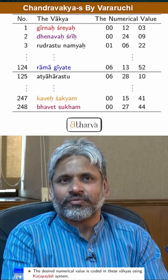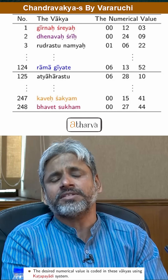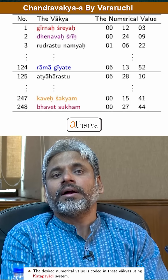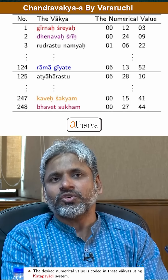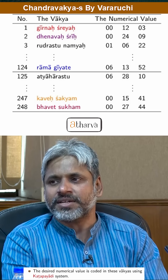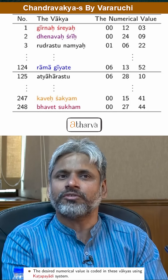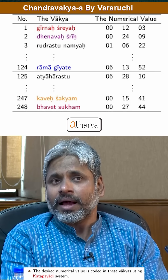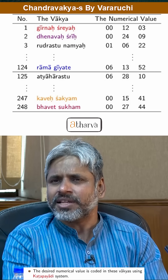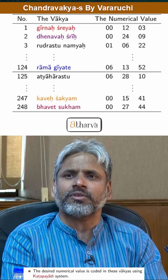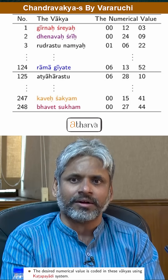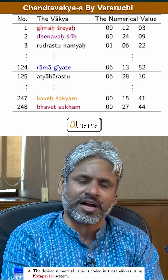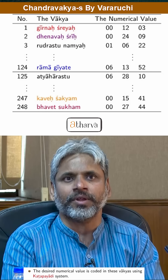That is the first Vakya. The second Vakya represents the true longitude of the moon on the second day. Similarly, the 248th Vakya, 'Bhaveth Sukam', represents the true longitude of the moon on the 248th day. When we say true longitude, it is the angular position of the moon from a fixed star called Ashwini Nakshatra, or the starting of the Mahesh Adhi.